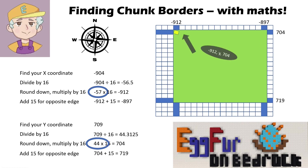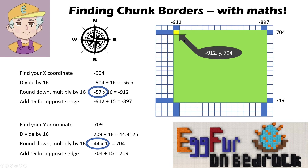So those are all of my chunk borders. Like I said, often you'll only need one corner, so you can cut out the last two calculations and you end up with minus 912, 704 as your chunk corner. As long as you're counting in the positive direction from there — from minus 912 up to minus 897, and from 704 up to 719 — all 16 blocks along in either direction are inside your chunk.